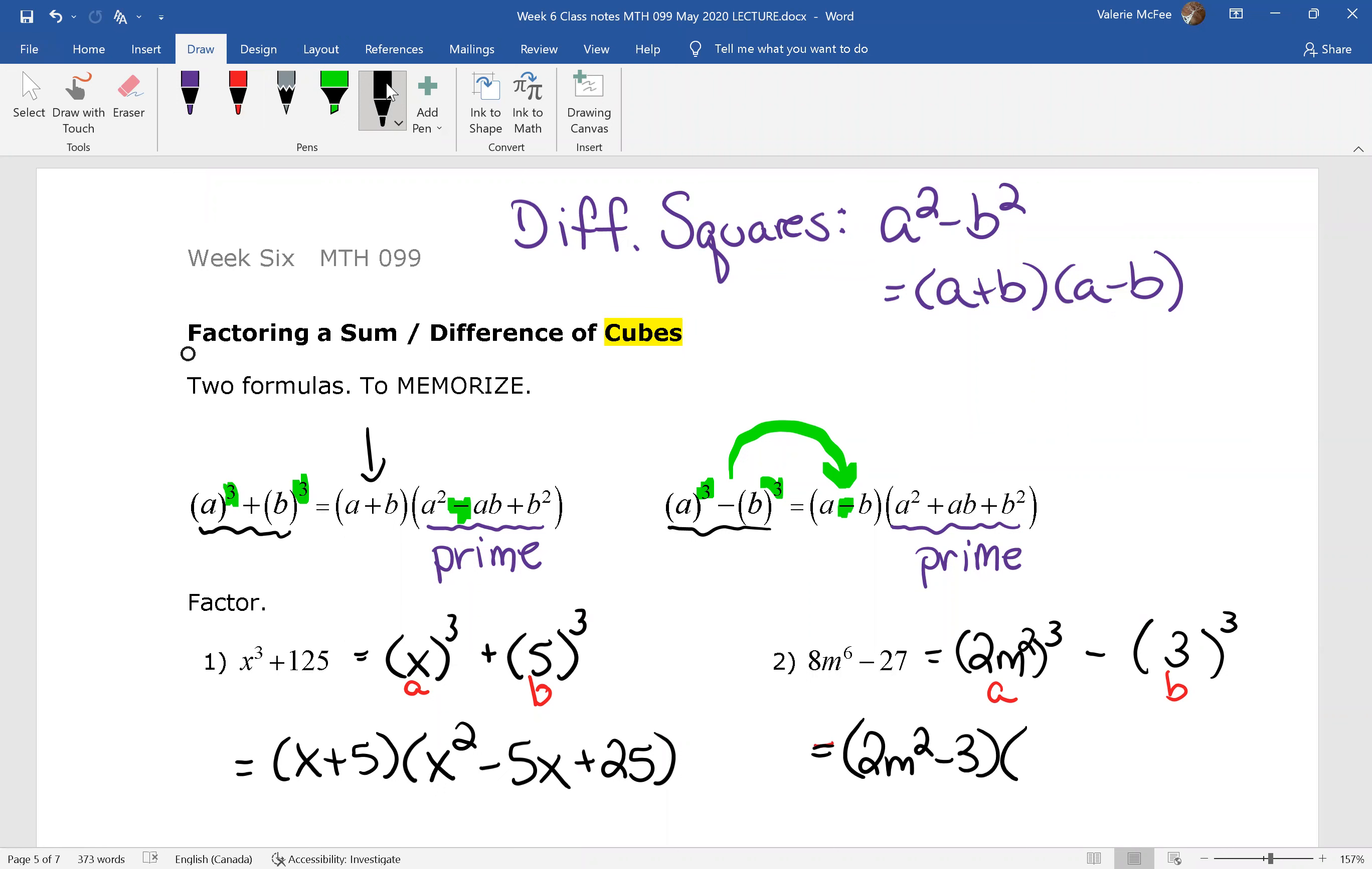And then a². So all of that in the brackets squared, that's going to be 4m⁴. We've already used our minus sign, so everything else is a plus here. a times b. 6m².